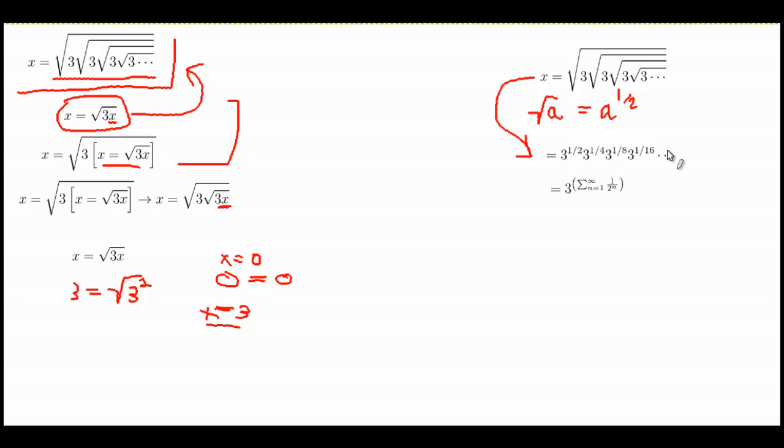...is simply 3 to the power of the sum of 1 over 2 to the n from n equals 1 to infinity, which is basically just 3 to the half plus one-fourth plus one-eighth plus one-sixteenth and so on.